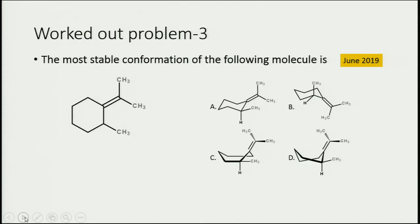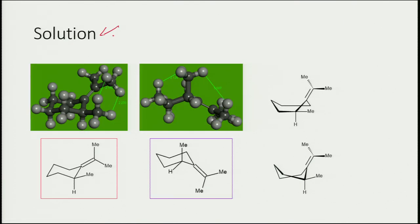Moving to the next problem, we look at the stable configuration of a given molecule. This molecule has a double bond, which adds some complication. Some of the answer choices are twist-boat conformations. When we draw the cyclohexane chair conformation in a three-dimensional structure, we can easily visualize the steric interactions.